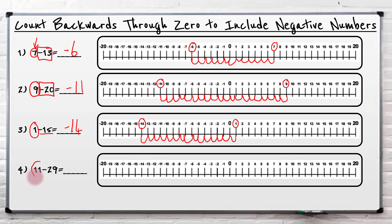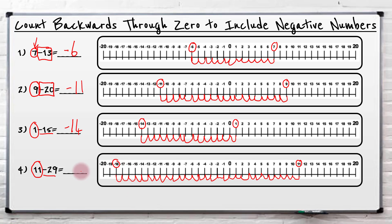And then the final one. I'm at eleven and I'm going to take away or go back twenty-nine. Back twenty-nine — this is going to be quite a big jump down, but we can do it. One, two, three, four, five, six, seven, eight, nine, ten, eleven, twelve, thirteen, fourteen, fifteen, sixteen, seventeen, eighteen, nineteen, twenty, and then on to twenty-nine. So if I'm at eleven and I subtract twenty-nine or go back twenty-nine, I get to minus eighteen or negative eighteen.